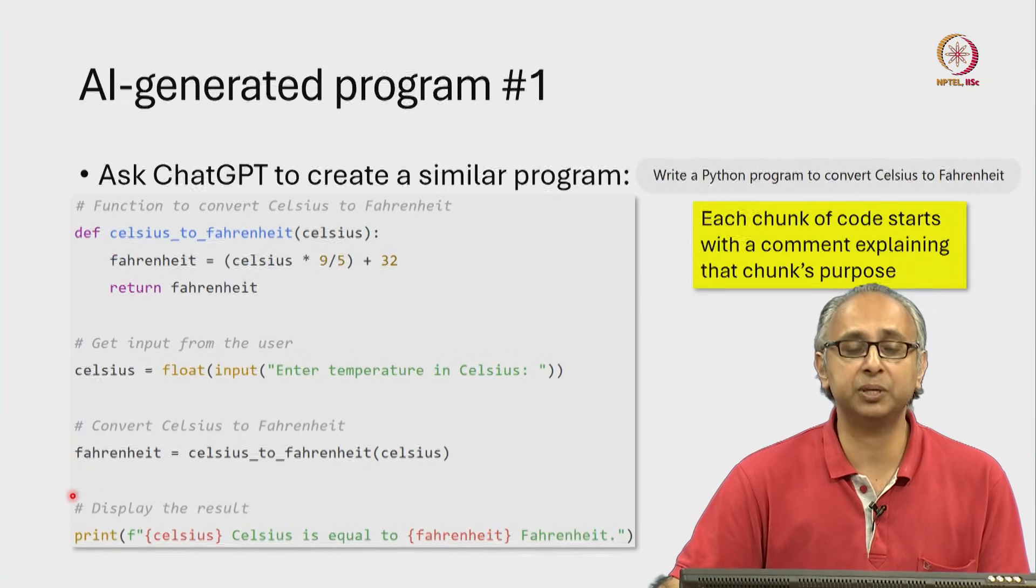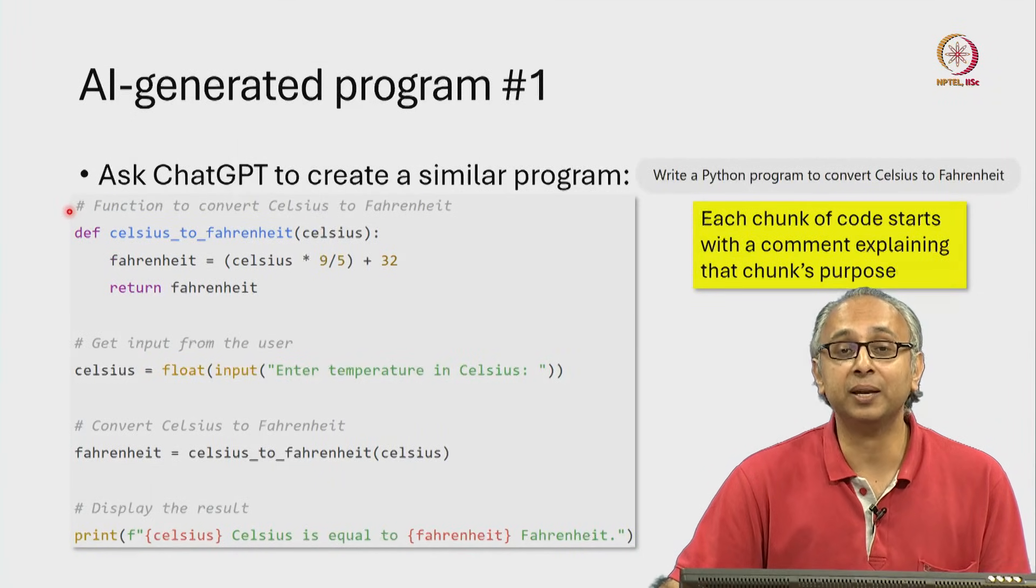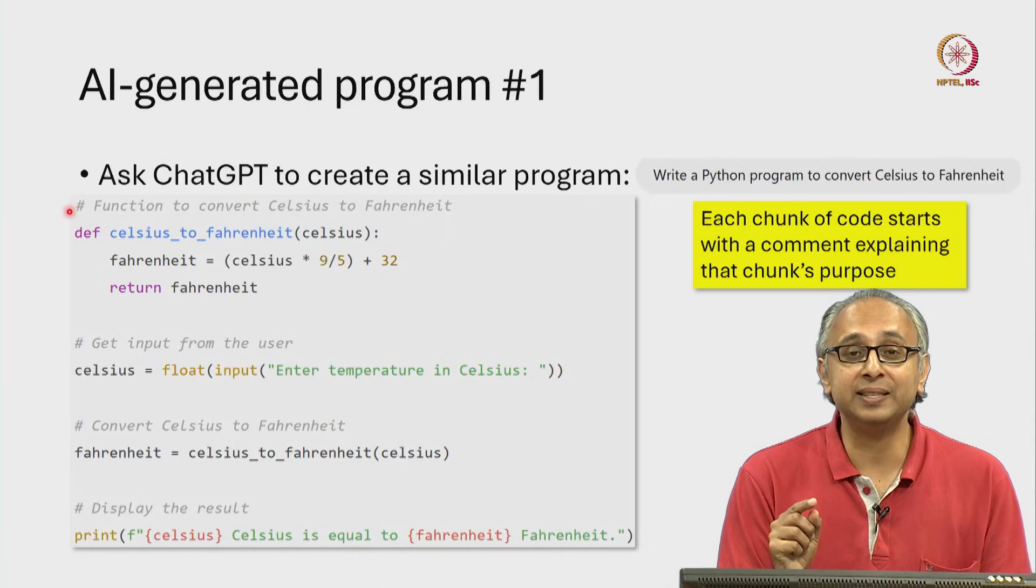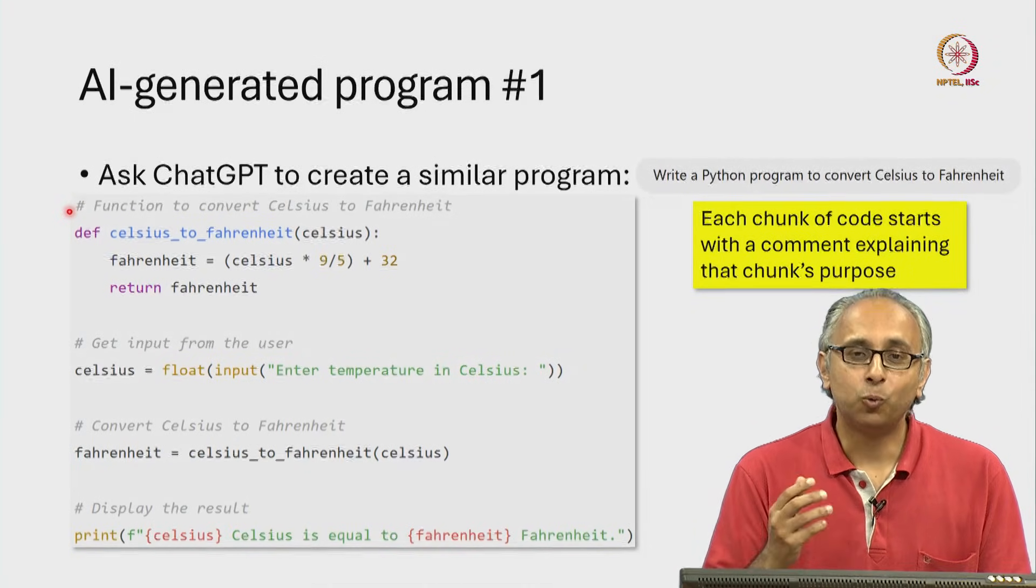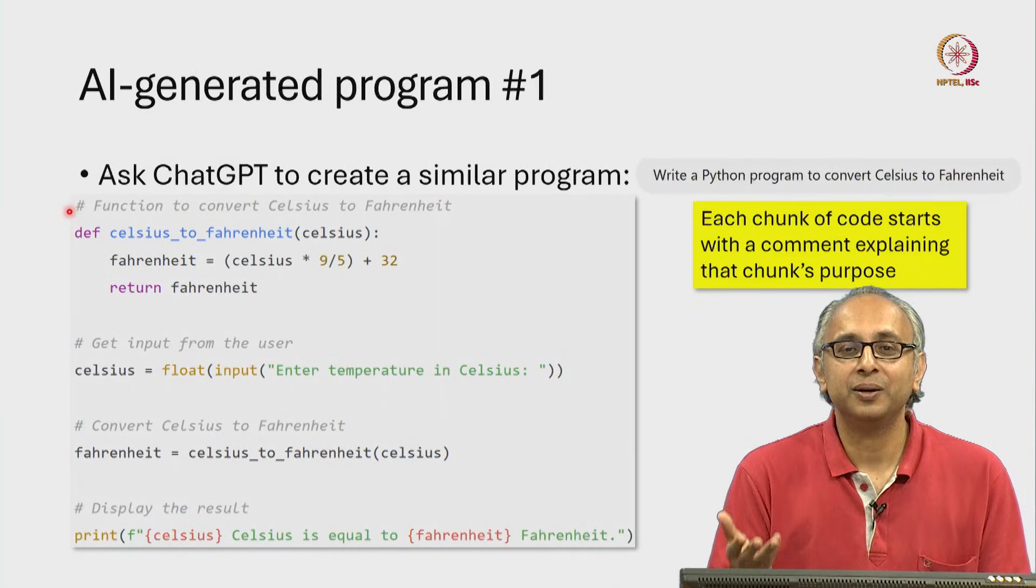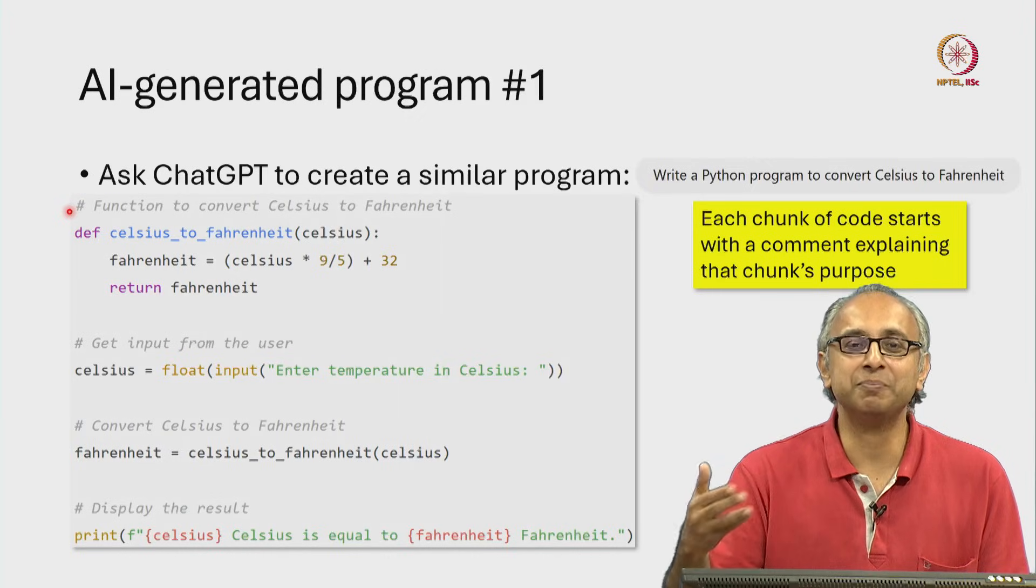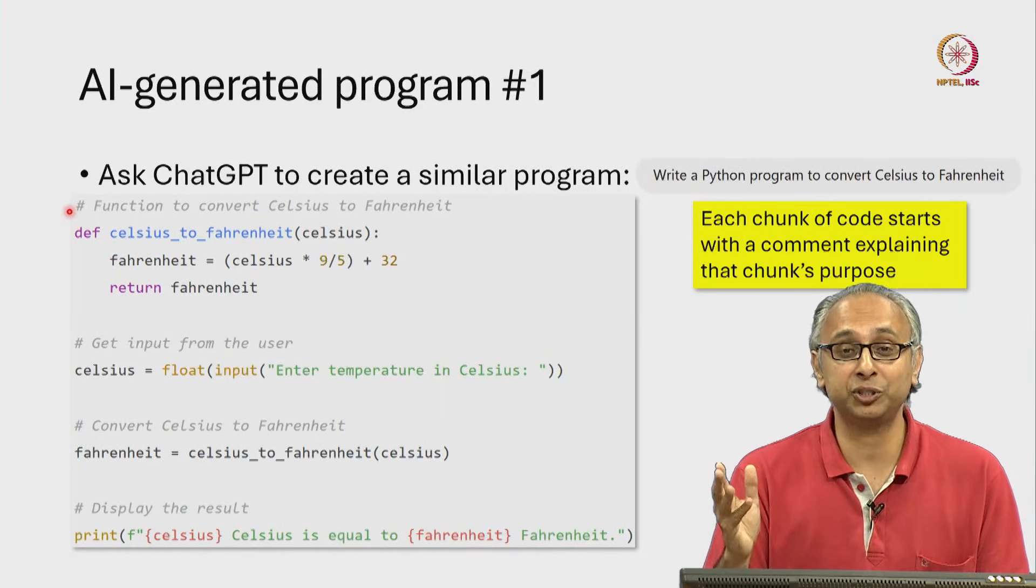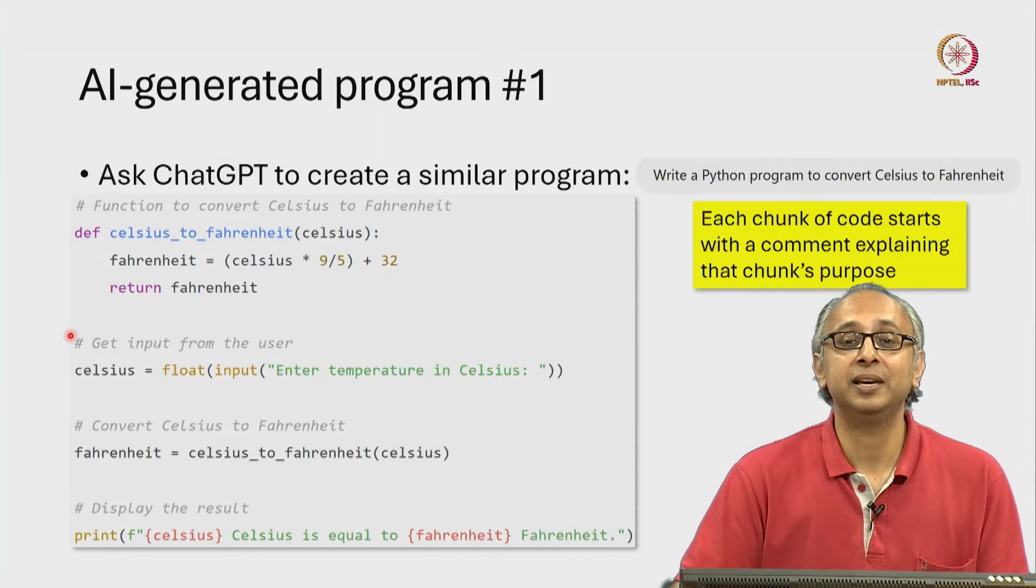It's put spaces in between them and each chunk actually starts with a comment. That comment explains the purpose of that chunk. Why is ChatGPT producing code like this? Well, ChatGPT has been trained on code written by others and many professional programmers like writing code like this.